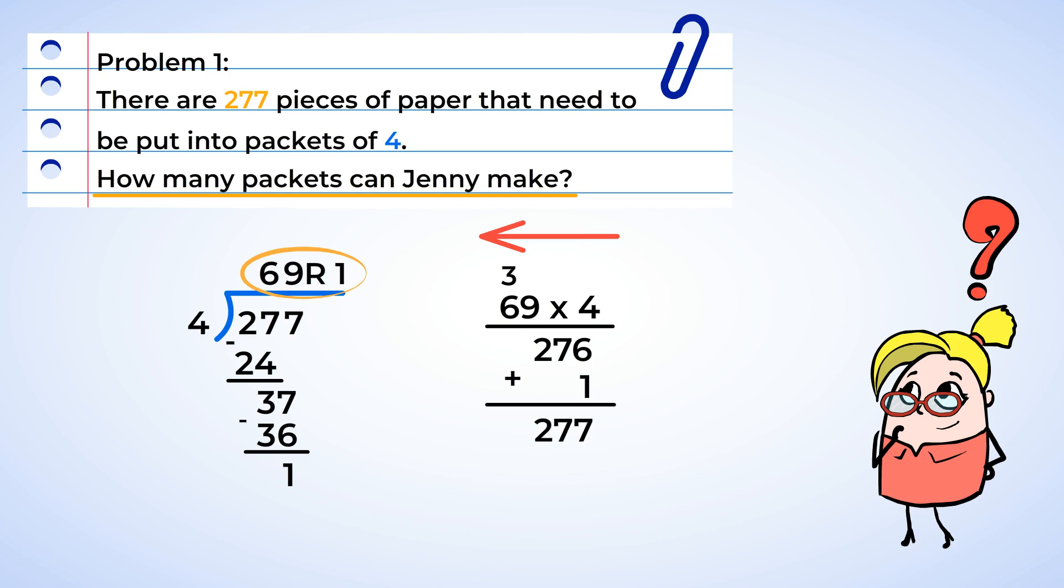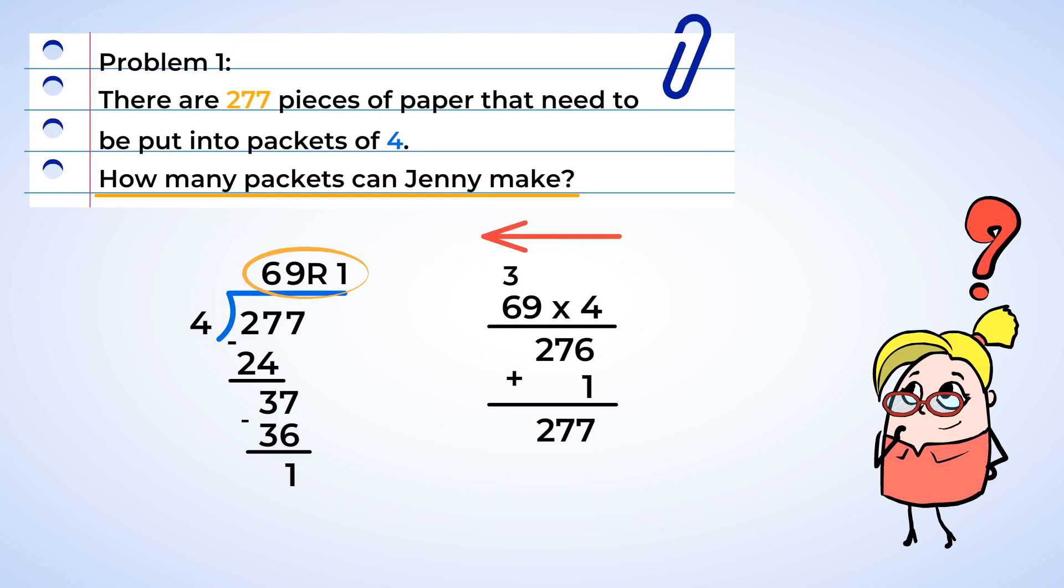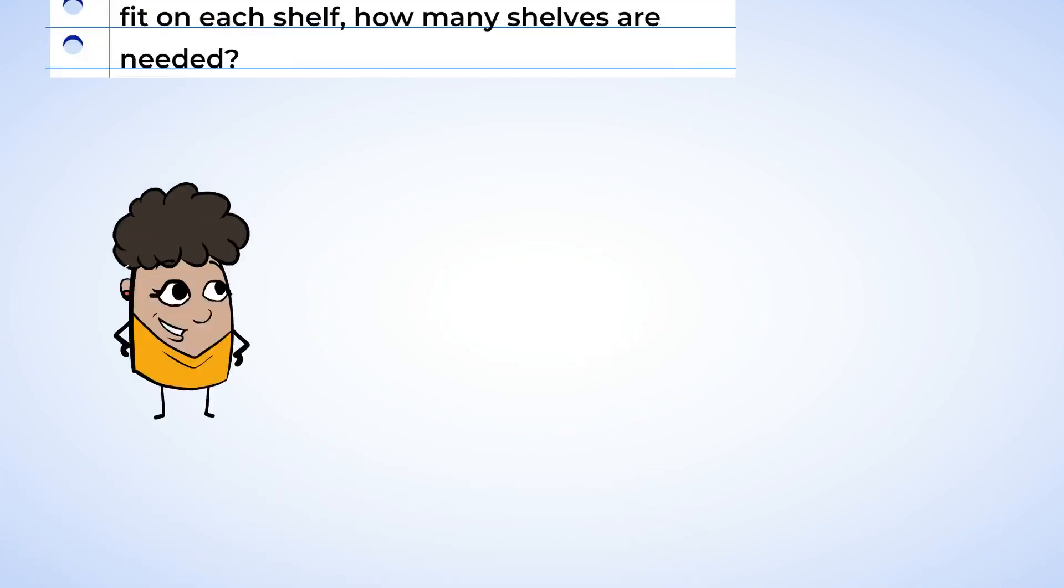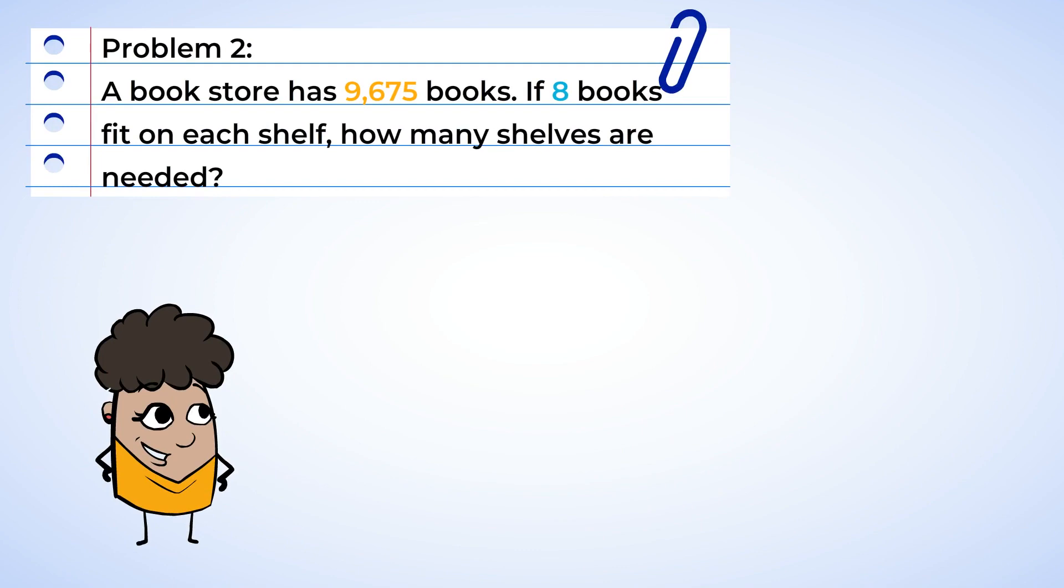That's the same. You've divided the numbers correctly. So now we have our answer. You can make 69 packets with 4 pieces of paper in each, and there will be 1 piece of paper left over. Now the second problem is waiting for you.